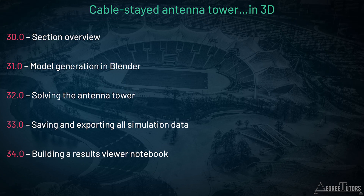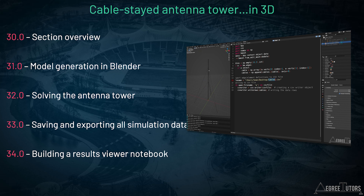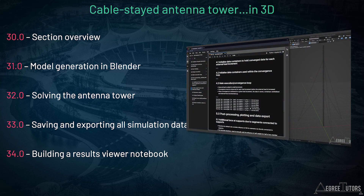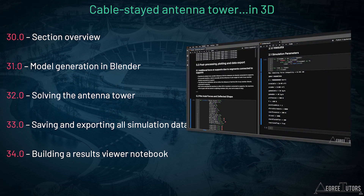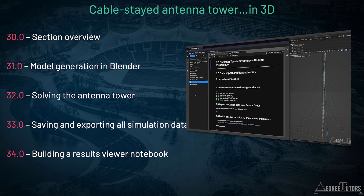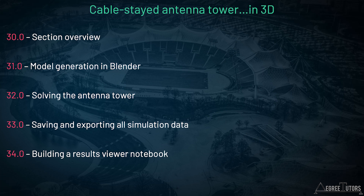In this section, we'll model and analyze a cable-stayed antenna tower. Since we analyzed a 2D lattice tower previously, it seems logical that we should tackle a 3D version now. This is the only structure in the course that's not a cable net, and it demonstrates that we can use the code to tackle any 3D cable-stayed structure in addition to cable nets. This will be our first full run-through of the complete modeling and analysis workflow — we'll start by generating the model geometry in Blender and exporting it for use inside our analysis notebook. Next, we'll solve the structure and write code to export the relevant data to CSV for visualization. We'll also build a second notebook for visualizing analysis results, so in the future we can simply save the output data and visualize it without having to run the full simulation again.